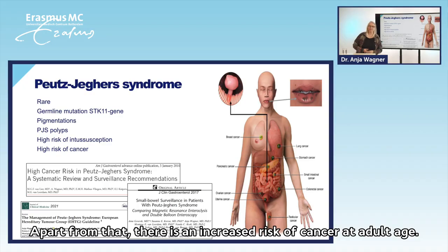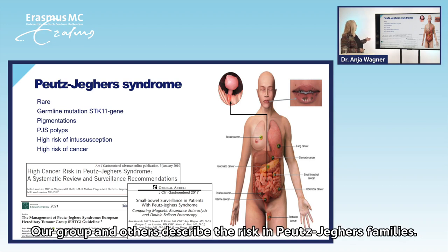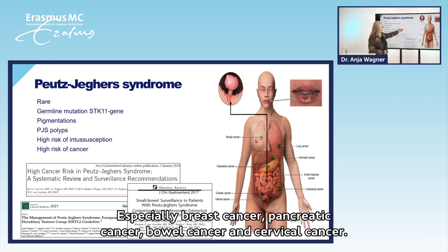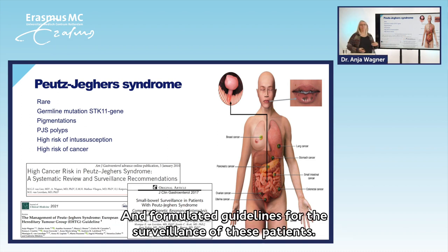Apart from that there is an increased risk of cancer at adult age. Our group and others described the risk in Peutz-Jeghers families — especially breast cancer, pancreatic cancer, bowel cancer and cervical cancer — and formulated guidelines for the surveillance of these patients.